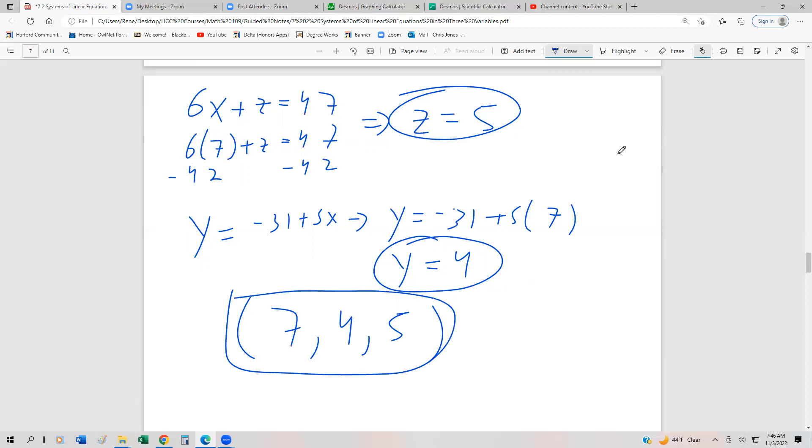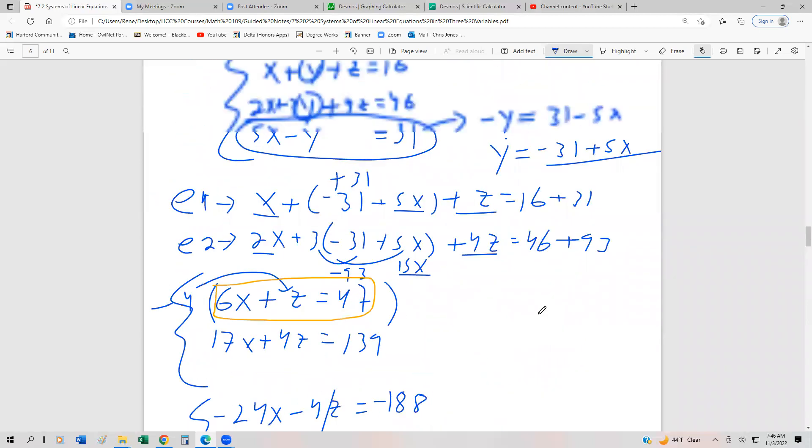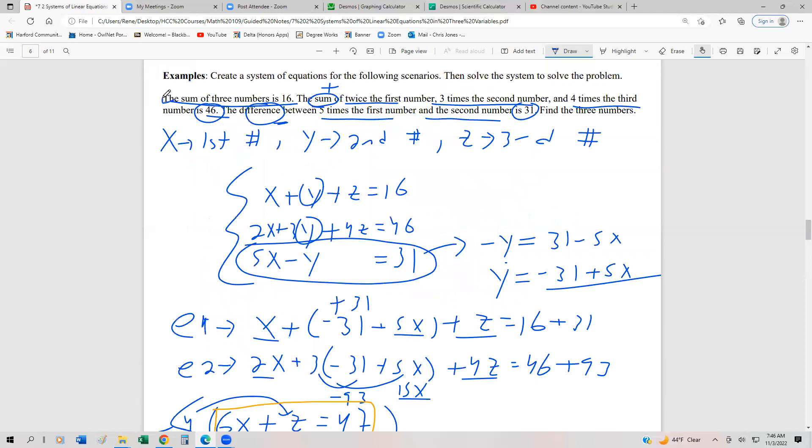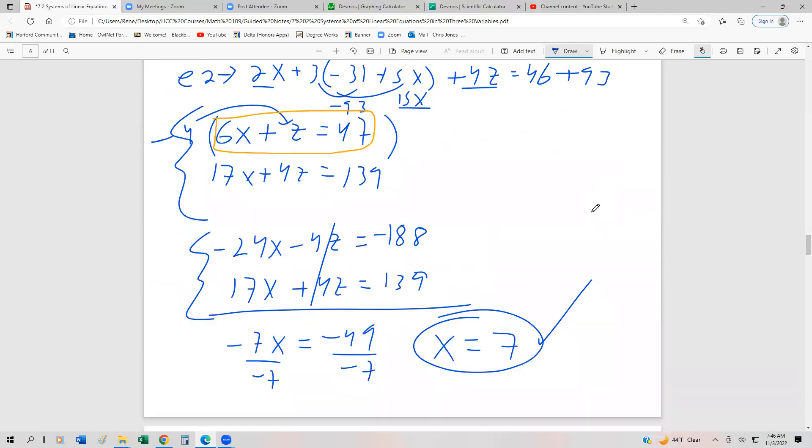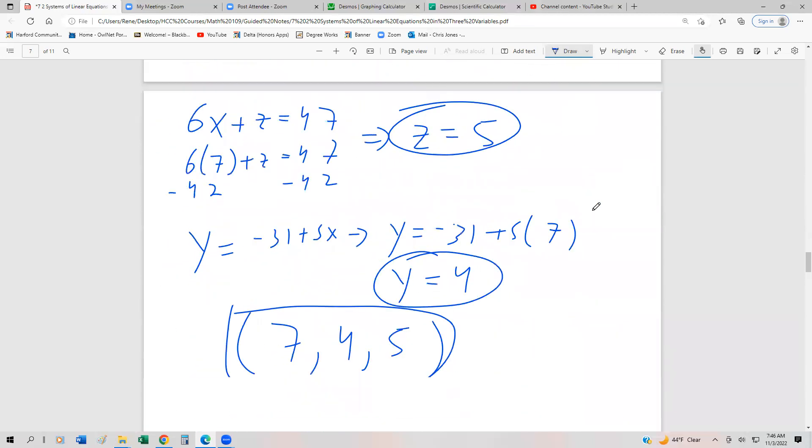Now, does that make sense? Well, remember at the very beginning, the sum of the three numbers has to be 16. So if we check that and that works out, it's most likely that the other stuff is going to work out too, considering all the steps we've gone through. 7 plus 4 is 11. 11 plus 5 is 16. We take a deep sigh of relief because it works.